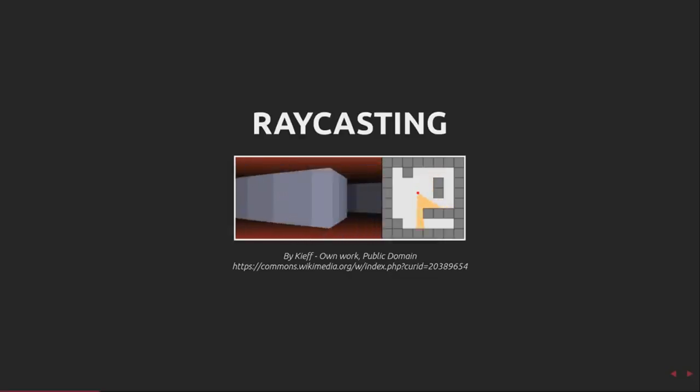Raycasting is a simplified version of raytracing. Raytracing fires a ray for every pixel on the screen, whereas raycasting fires a ray for every pixel column. This drastically reduces the amount of tracing required, but does limit the types of things that can be drawn.